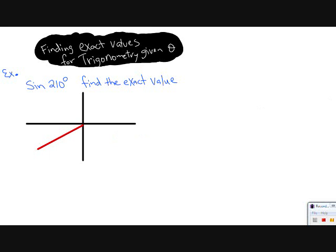In the third quadrant, I can place a line from the origin and label this 210 degrees.